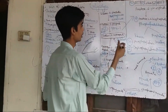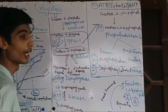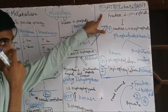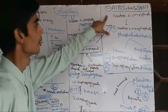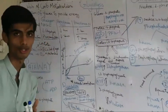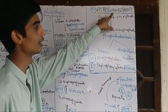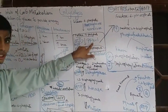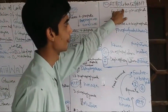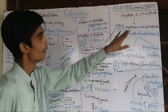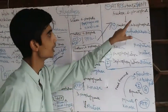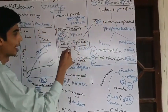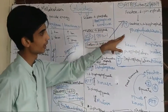PFK-1 regulation is very important. It is allosterically regulated by energy levels of the cell. If energy levels are high, ATP and citrate (a TCA cycle intermediate) both inhibit PFK-1 — there is no need for glycolysis when ATP is already abundant. Conversely, AMP signals low energy and activates PFK-1, stimulating glycolysis.